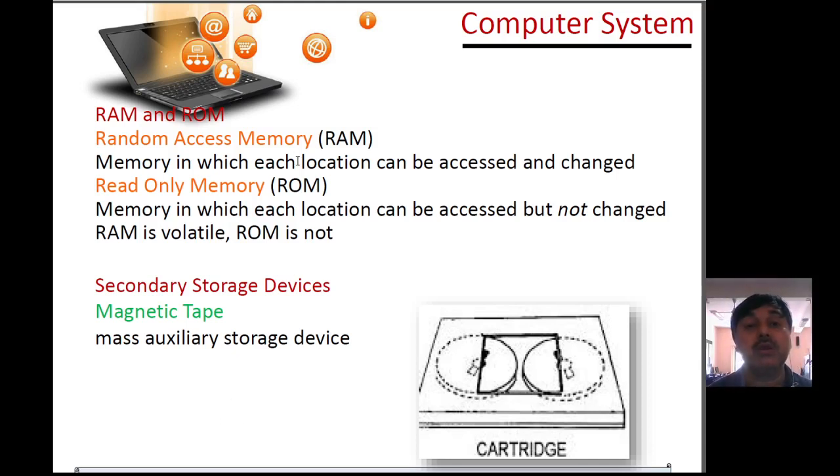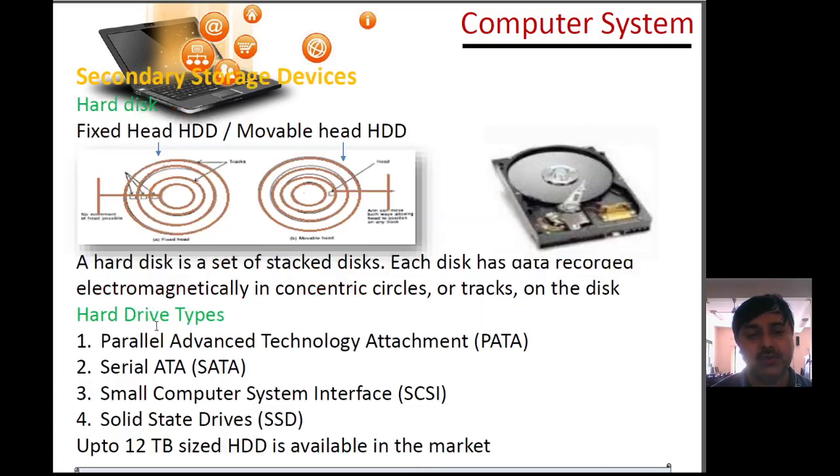Now memory section: RAM and ROM. RAM means Random Access Memory, which can be accessed and changed. ROM means Read Only Memory, which can be accessed but not changed. RAM is volatile and ROM is non-volatile. Secondary storage includes cartridges, nowadays pen drives. Hard disk is there in all machines. We have PATA (Parallel Advanced Technology Attachment), SATA (Serial Advanced Technology Attachment), SCSI (Small Computer System Interface), and SSD (Solid State Drive). 12TB size HDD is available in the market.